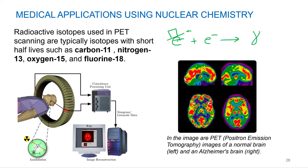And so wherever that positron was emitted, it's going to emit a gamma ray, and then the PET scan is detecting that photon, that gamma ray photon. And wherever it was emitted, you know that's where that positron emitter was.